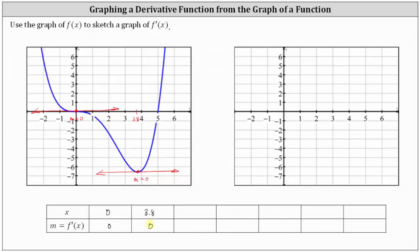This gives us two points on the graph of f prime of x. Now let's get some additional tangent lines. Let's sketch the tangent line at x equals negative one, which would be this point here. Now let's approximate the slope of the tangent line by determining the ratio of the rise to the run. Notice if we go down approximately 1.5 units and right one unit, we find another point on the tangent line. Therefore the vertical change is negative 1.5 and the horizontal change is positive one, so the slope of the tangent line at x equals negative one is approximately negative 1.5. Recording this in our table: when x equals negative one, the derivative function value is approximately negative 1.5.